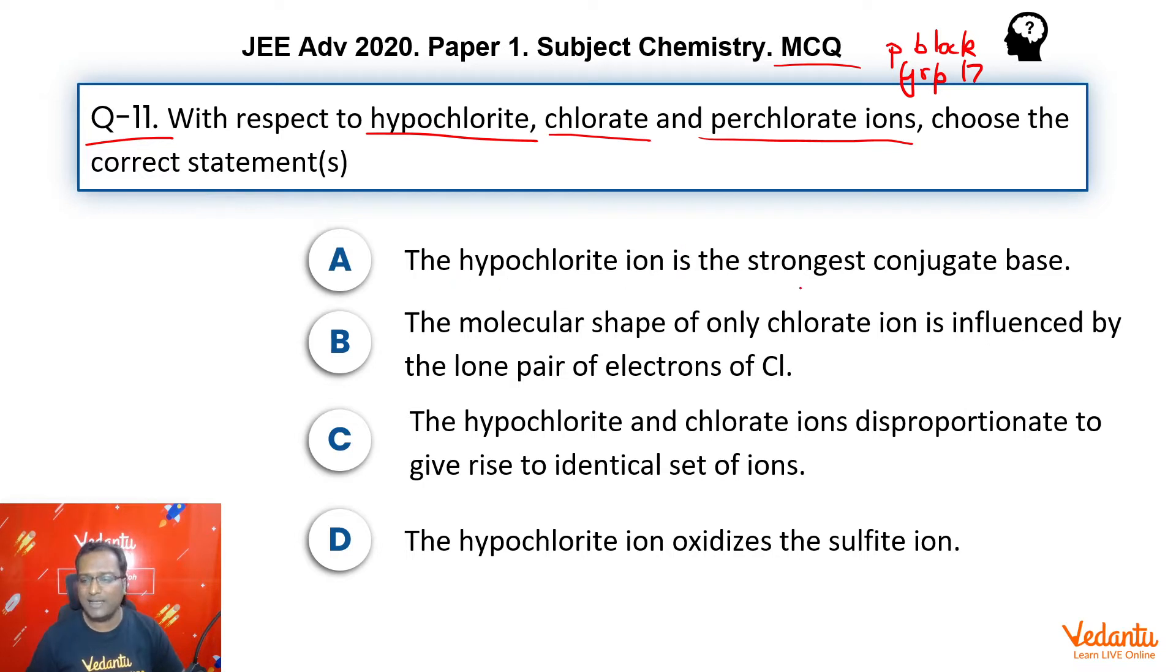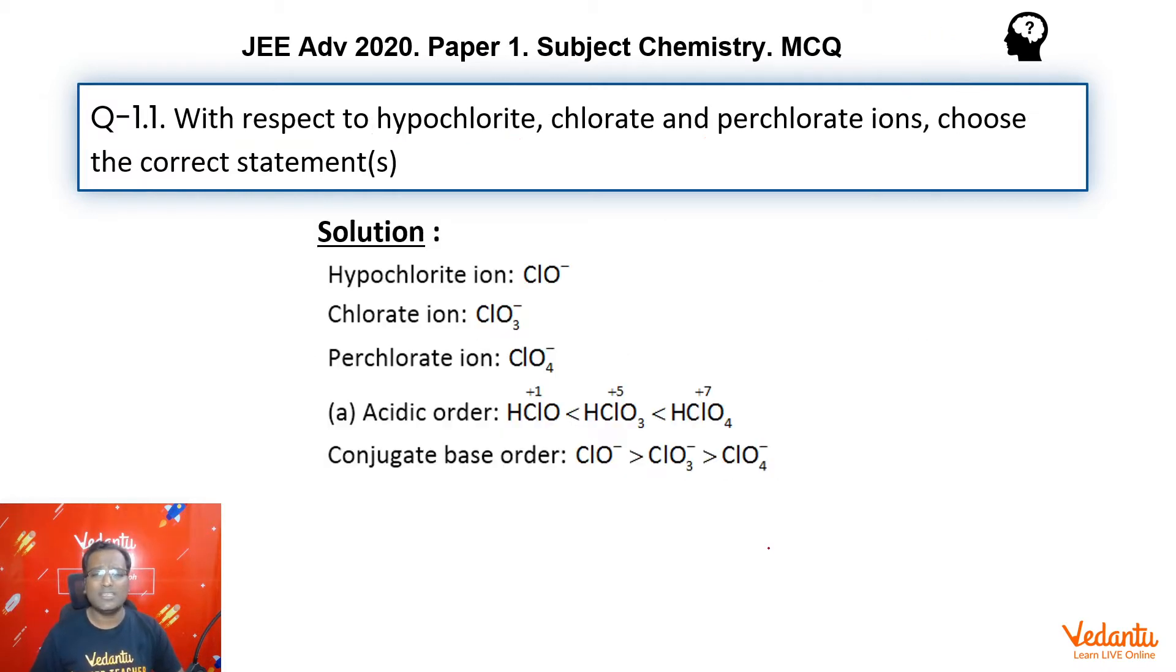First says, hypochlorite ion is the strongest conjugate base. Second talks about the molecular shape of chlorate ion. Third talks about hypochlorite and chlorate disproportionating. And fourth talks about hypochlorite acting as an oxidizing agent. So, let's take them point by point.